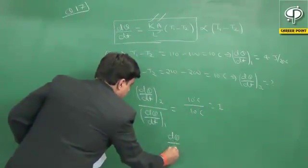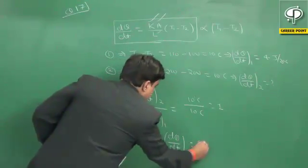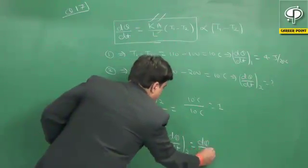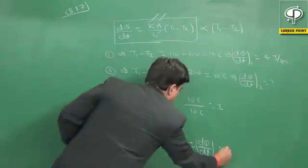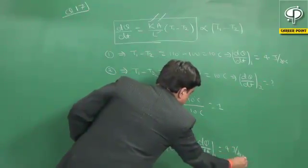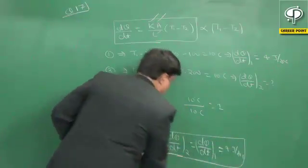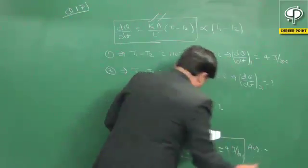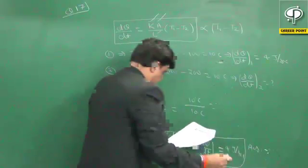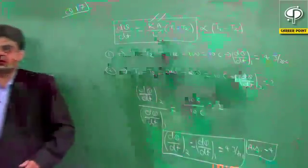Now the heat flow rate dQ by dt2 equals dQ by dt1. The value of heat flow rate is 4 joule per second. So the answer to this question is option 4. Thank you very much.